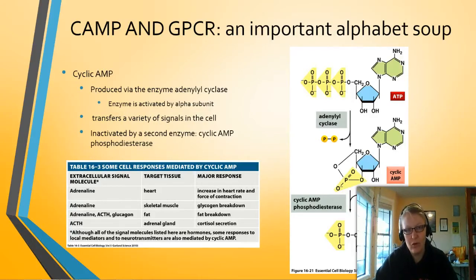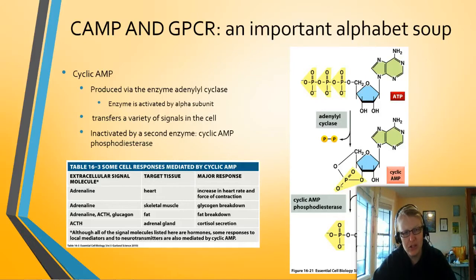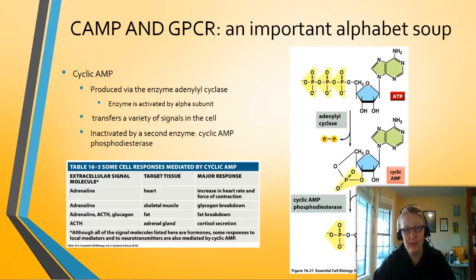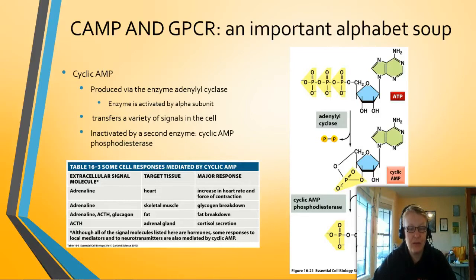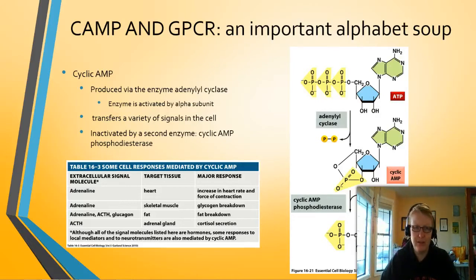Cyclic AMP has other roles in the body as well — it's not just tied to GPCRs. You can see the cyclic AMP molecule in the picture on your slide; it has a triangle-shaped structure on the side. Adenyl cyclase takes ATP, removes two phosphates, and creates cyclic AMP. Once the cyclic AMP signal is done being used, it's transformed back into AMP by cyclic AMP phosphodiesterase. It's the secondary messenger the cell uses and then deactivates, and there are a lot of cell responses mediated by cyclic AMP.